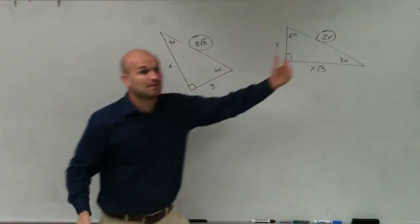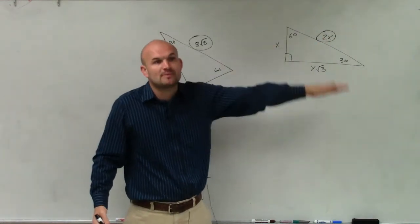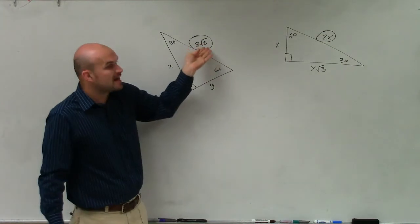So what we're doing is we're actually going backwards. We're not starting with the short leg and then multiplying by 2 and multiplying by square root of 3. Now we're starting with the hypotenuse.